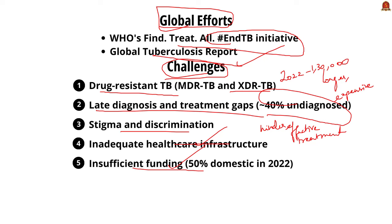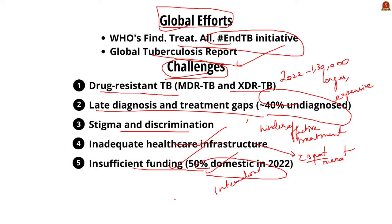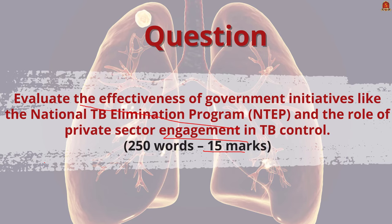Additional challenges include healthcare infrastructure — we need advanced diagnostic tools like CBNAAT and TrueNAT in many regions. There is also insufficient funding for TB control programs; in 2022, India's domestic funding covered only about 50% of the required budget, requiring reliance on international aid. For the mains question: 'Evaluate the effectiveness of government initiatives like the National TB Elimination Program and the role of private sector engagement in TB control' — write an answer and post it in the comments.